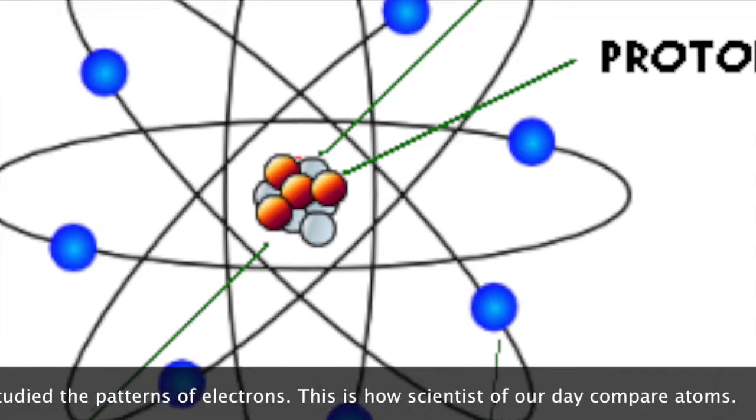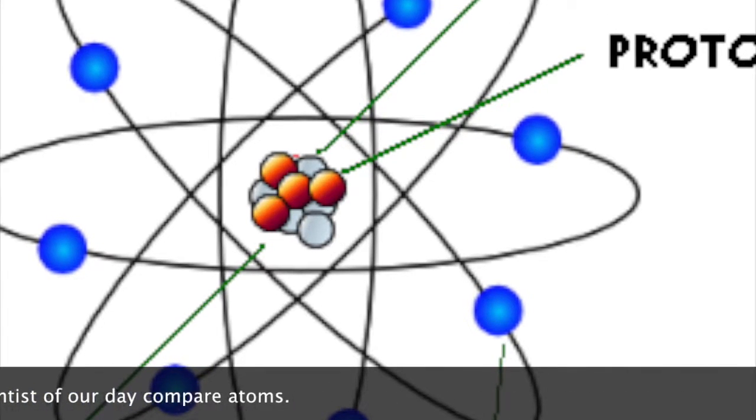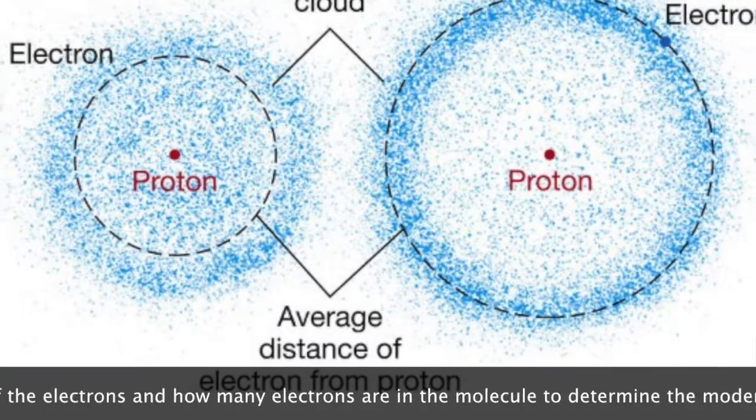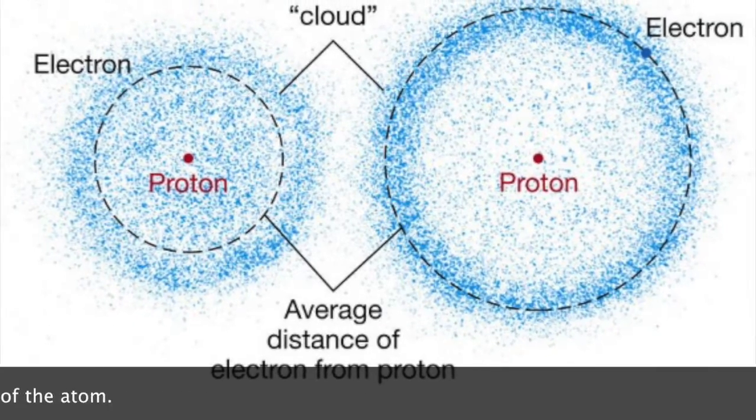He studied the patterns of electrons. This is how scientists of our day compare atoms. They used the movements of the electrons and how many electrons are in the molecule to determine the modern view of the atom.